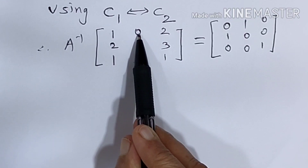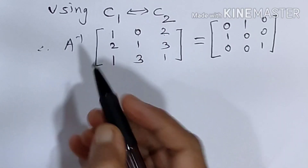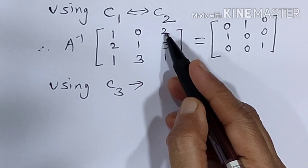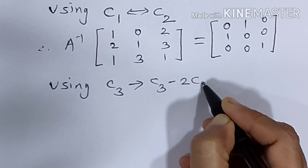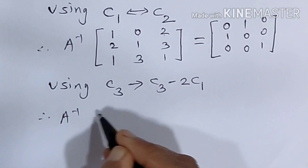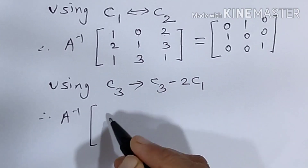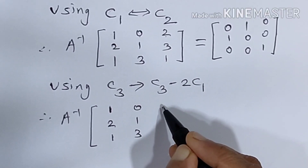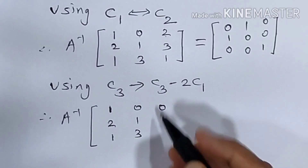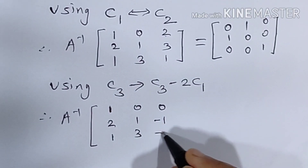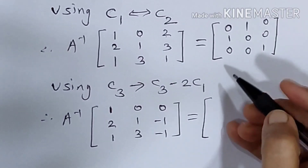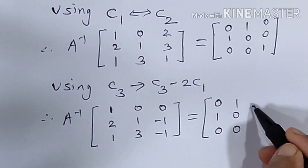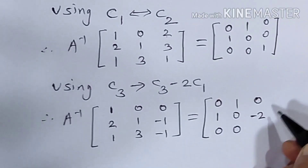We already got 1 here and 0 here. Now we want to get 0 in the remaining position. The next operation is C3 changes to C3 minus 2 times C1. The first two columns remain as is: 1 2 1 and 0 1 3. The third column becomes: 2 minus 2×1 = 0, 3 minus 2×2 = minus 1, and 1 minus 2 = minus 1. On the right-hand side, the third column becomes: 0 minus 2×1 = minus 2, 0 minus 2×0 = 0, and 1 as it is.